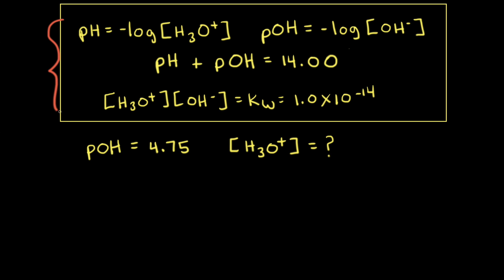Here are some equations that are often used in pH calculations. For example, let's say a solution is formed at 25 degrees Celsius and the solution has a pOH of 4.75, and our goal is to calculate the concentration of hydronium ions in solution, H3O+. One way to start this problem is to use this equation: